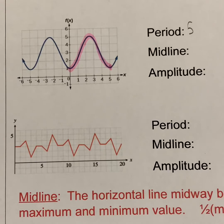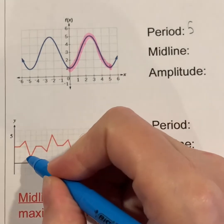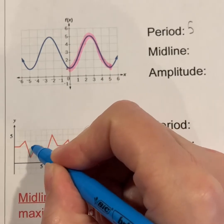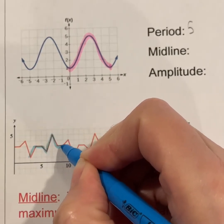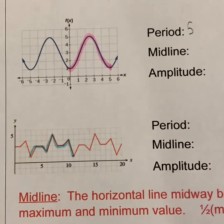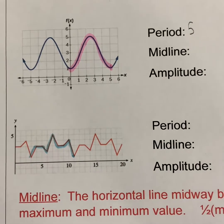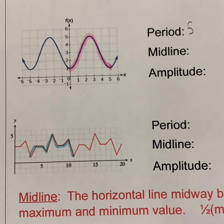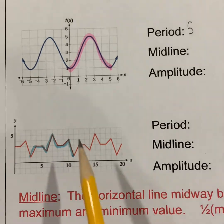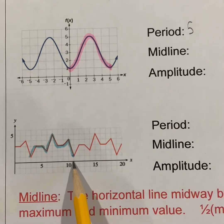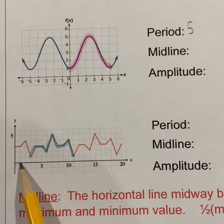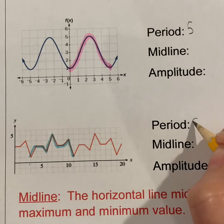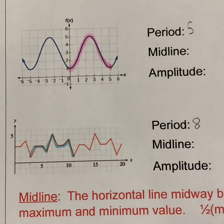This third one looks like some sort of medical type of thing. If I start here, that is one cycle because that same pattern repeats again. What would we consider the period for that function? Well, if this is 10 here, then it stopped at 11, and it started at 3. So 11 minus three tells me that this function has a period of eight.